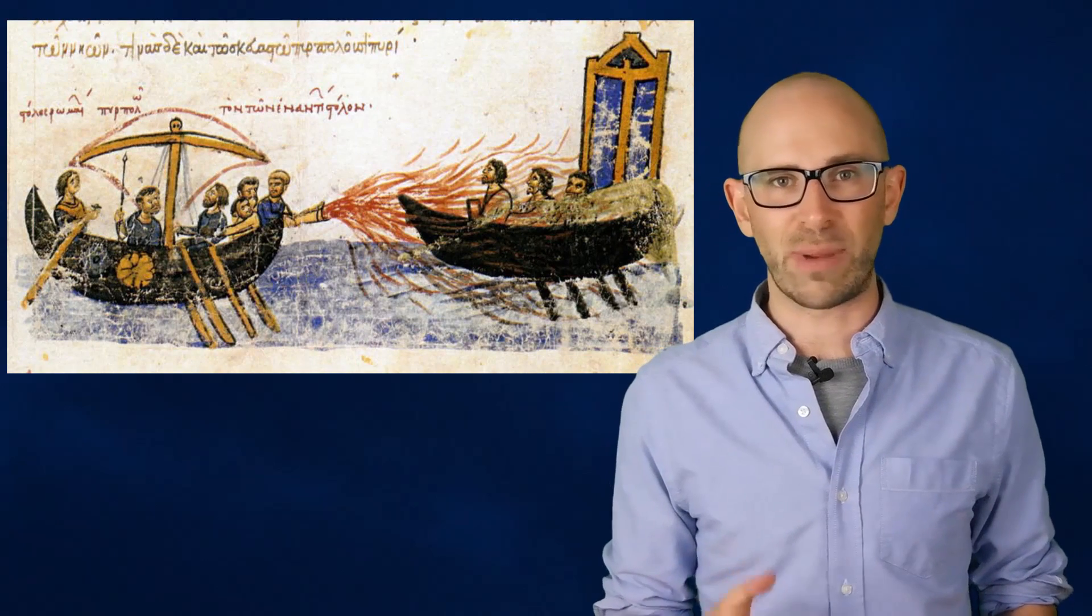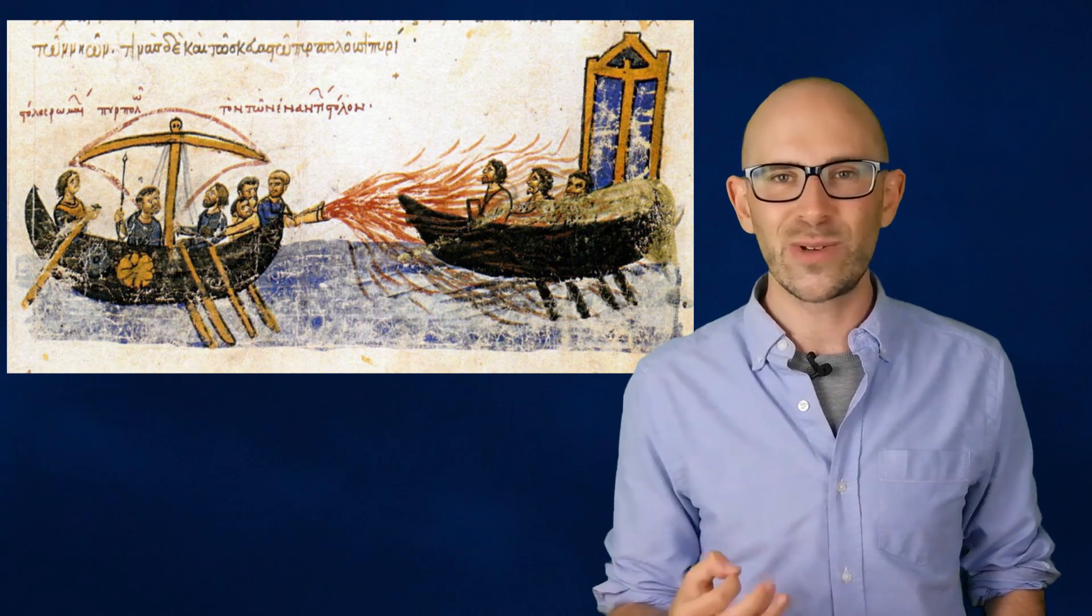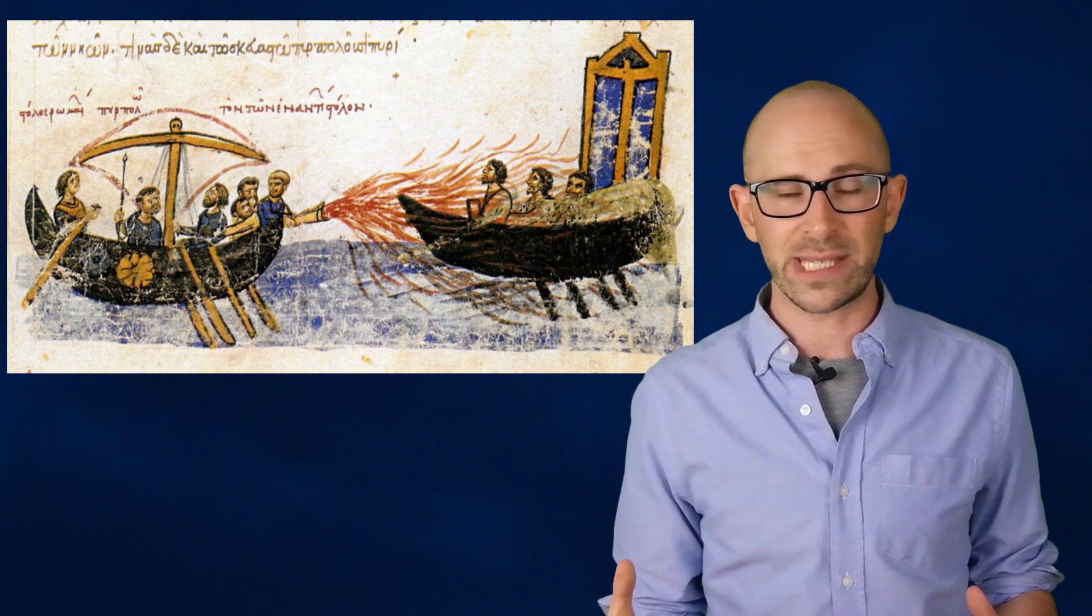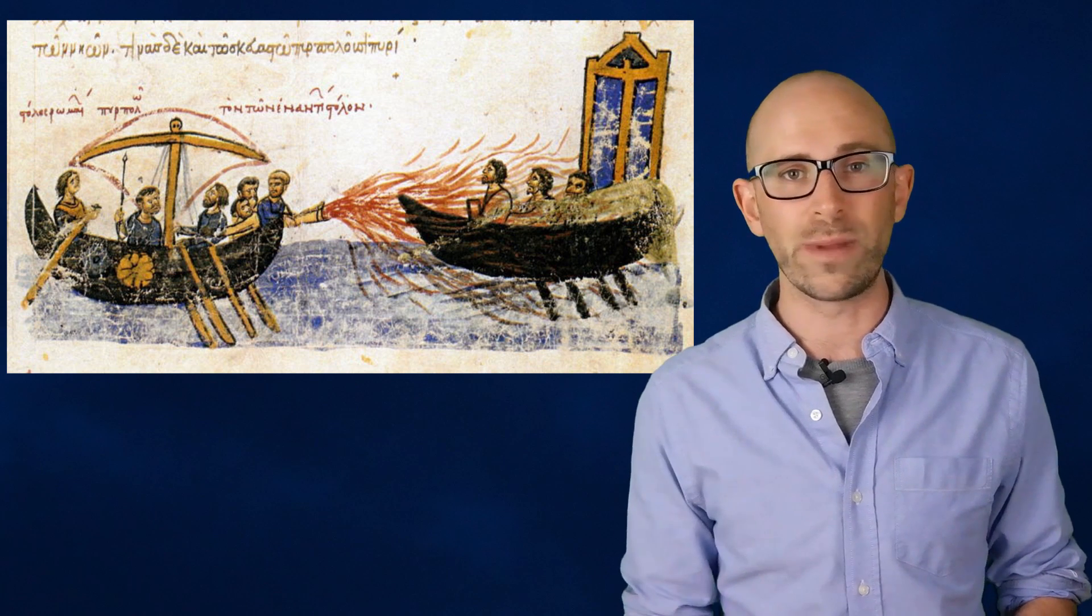Not wanting it to fall into the wrong hands, the recipe for this Byzantine superweapon was a closely guarded secret. It was handed down from one emperor to another, but during a period of instability, this didn't happen and the formula was lost.